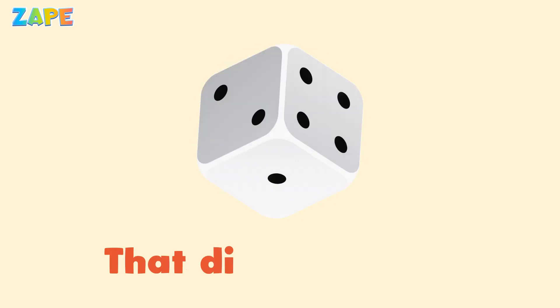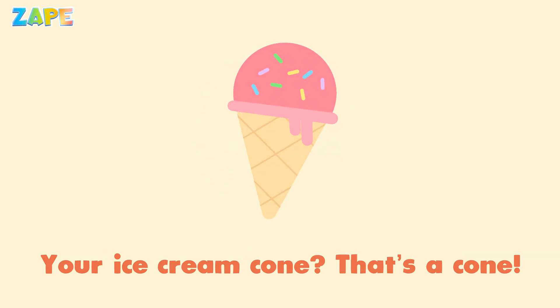Look around. That dice is a cube. Your soccer ball is a sphere. Your ice cream cone, that's a cone. And a soda can, that's a cylinder.